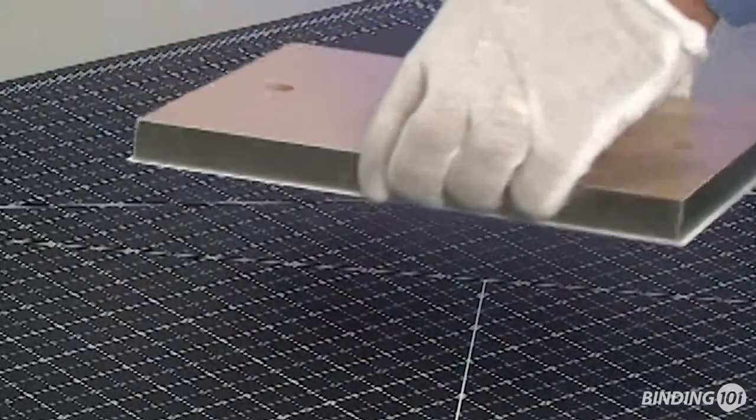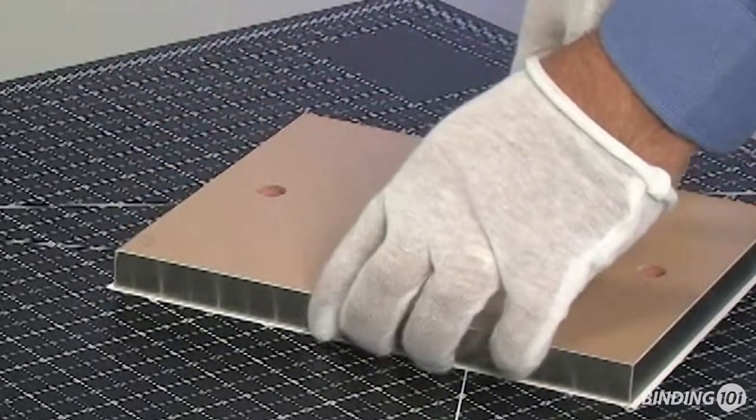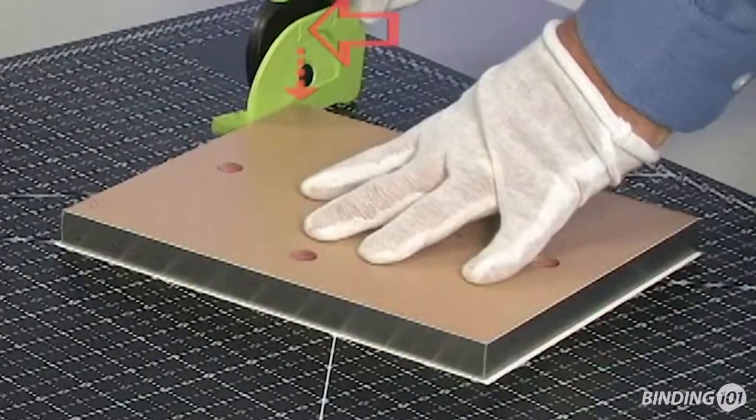Lift the mount from the mat with every turn to avoid scratching the print. Repeat to trim the other three sides of the photo flush with the frame.